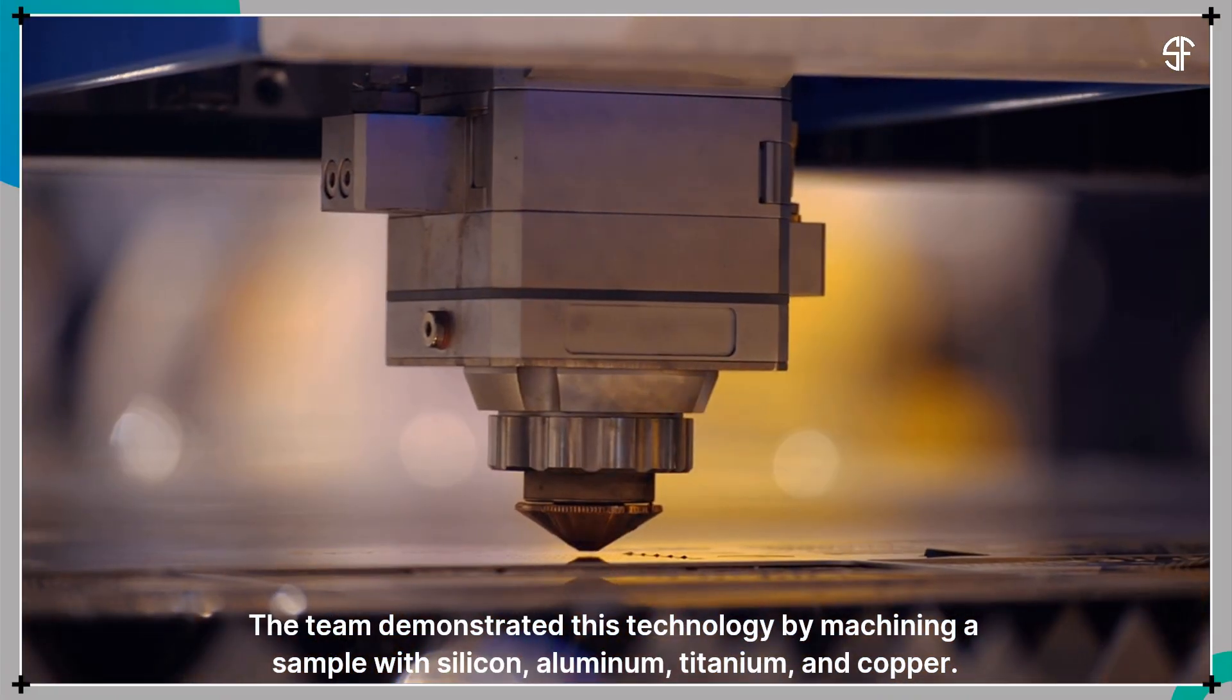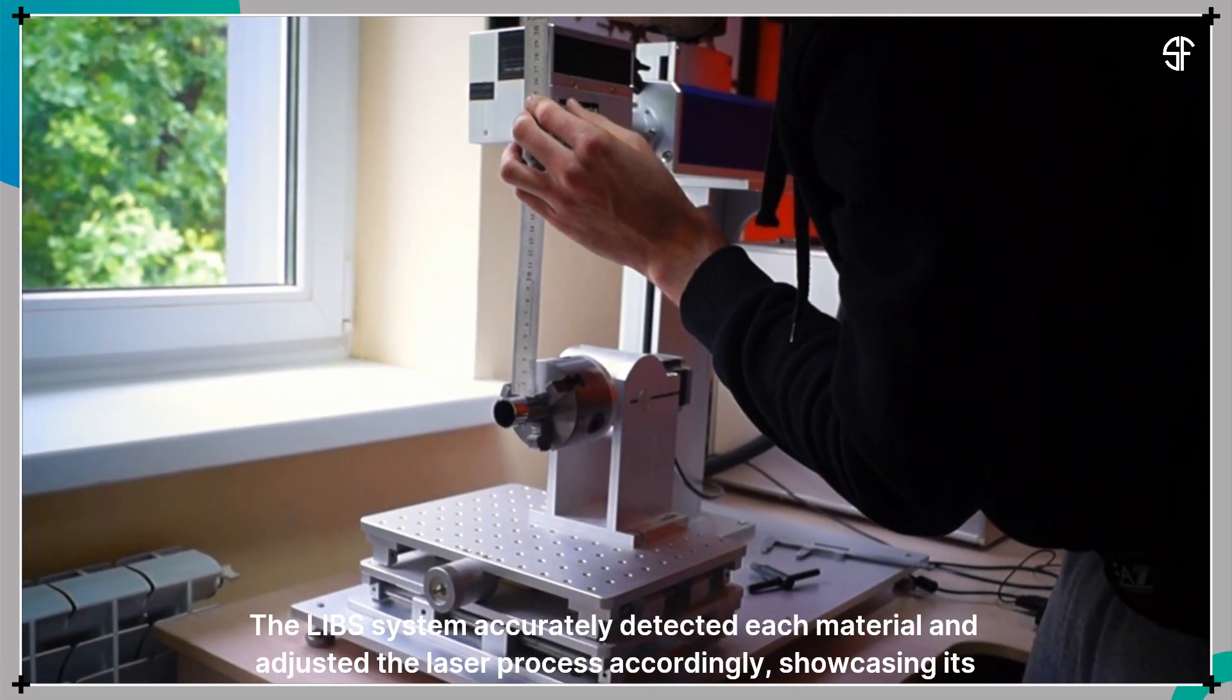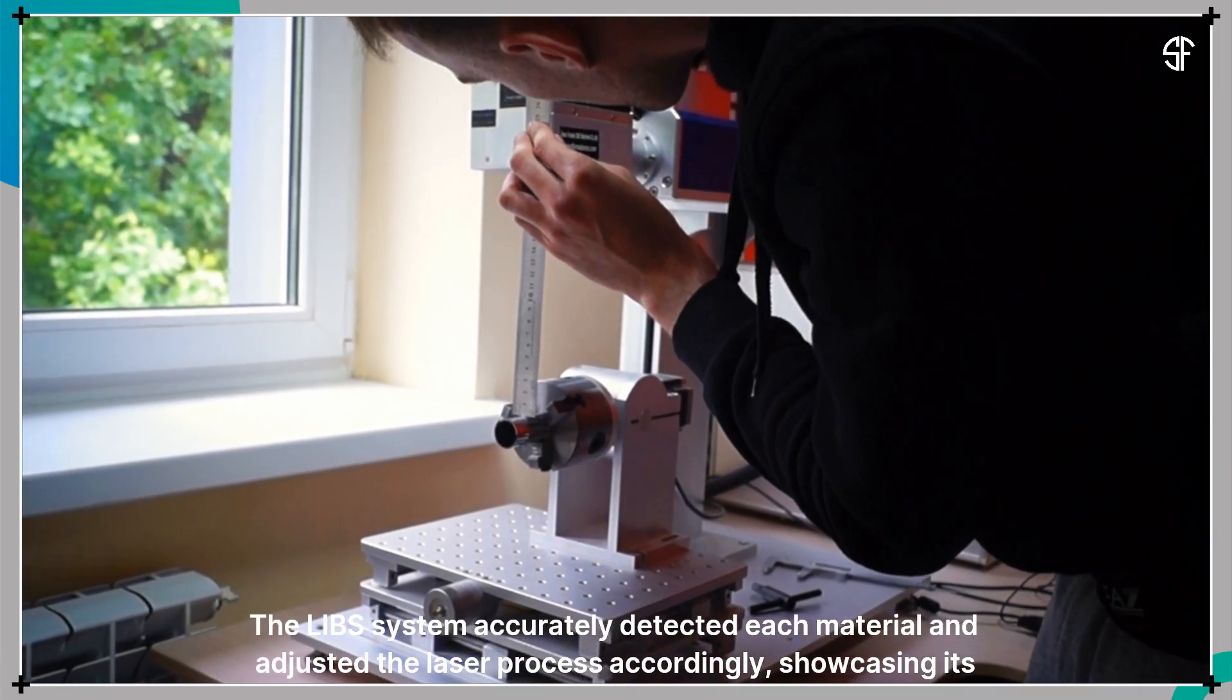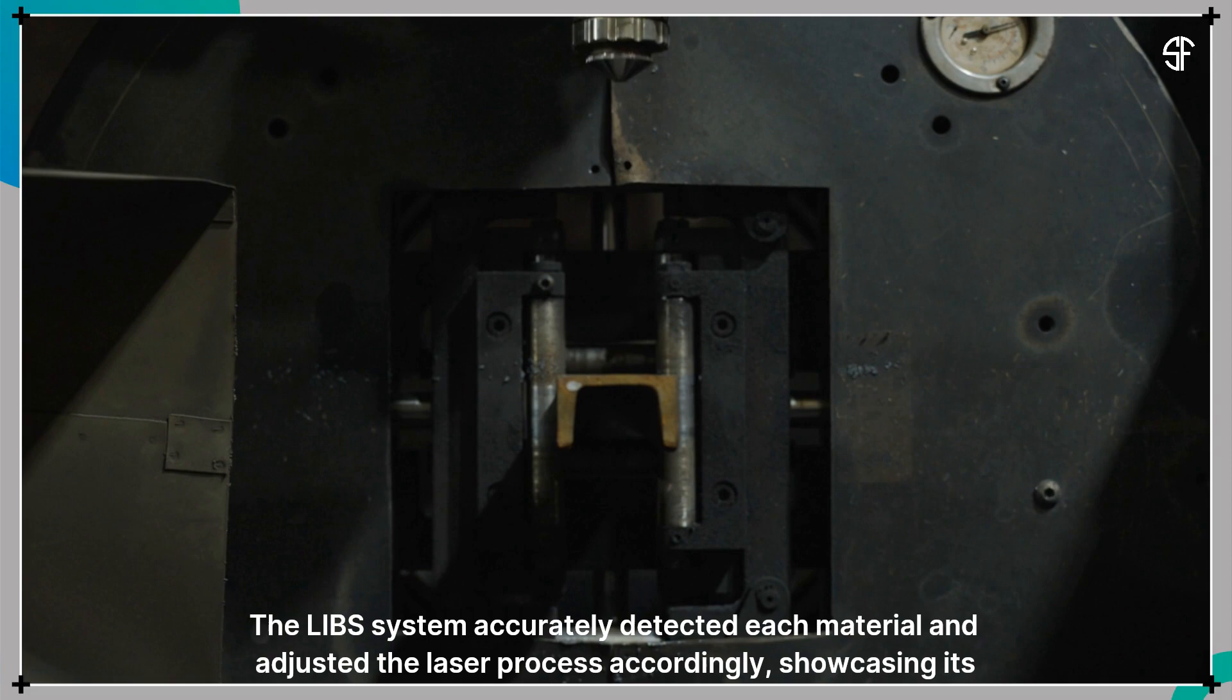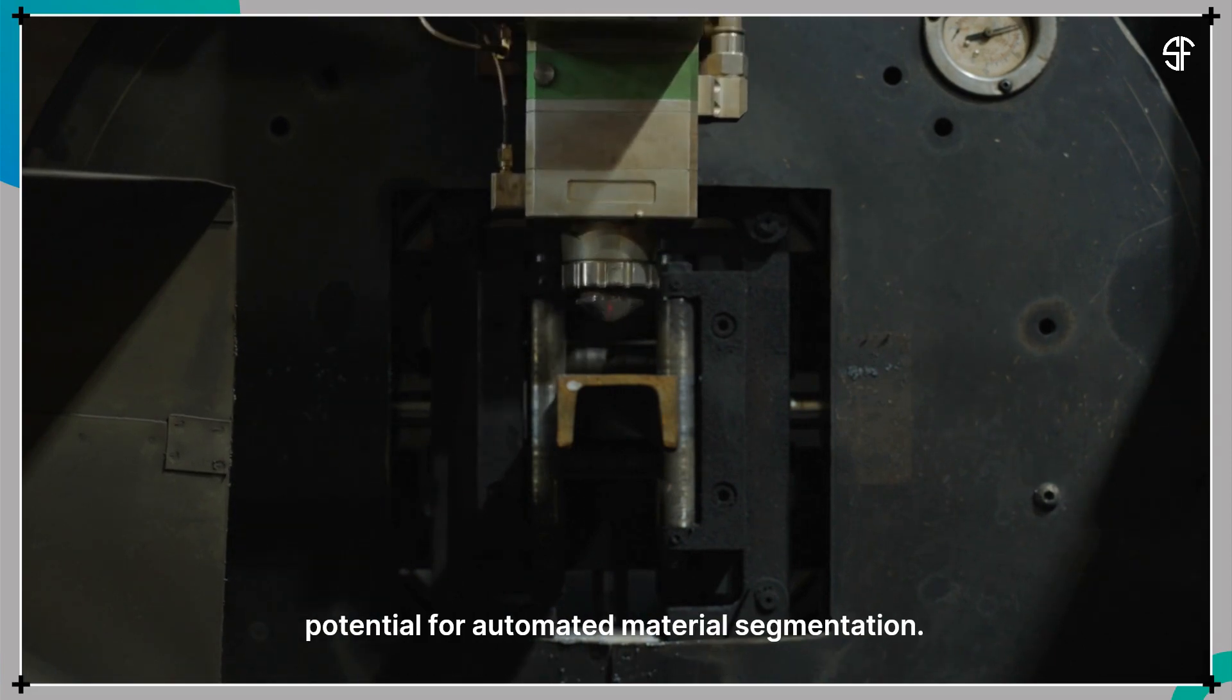The team demonstrated this technology by machining a sample with silicon, aluminum, titanium, and copper. The LIBS system accurately detected each material and adjusted the laser process accordingly, showcasing its potential for automated material segmentation.